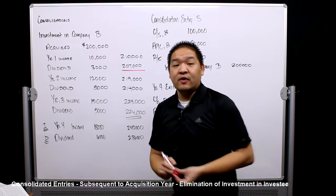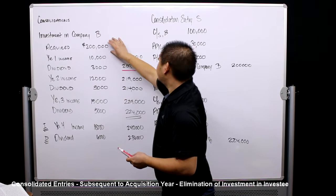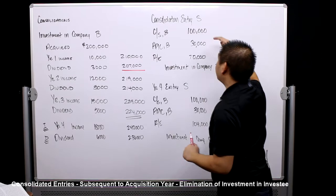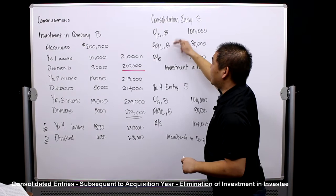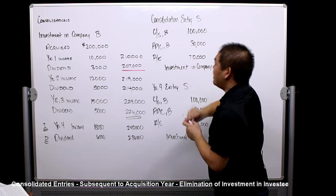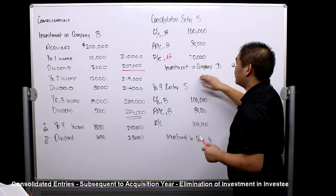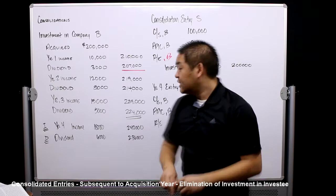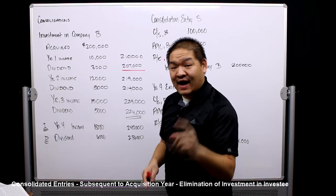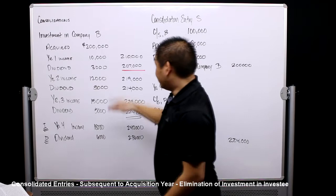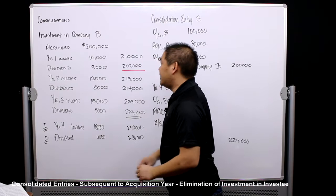In year one, consolidation entry S reverses these by debiting Company B's common stock, additional paid-in capital, and retained earnings — B's retained earnings on their books for $70,000 — and crediting investment in Company B for $200,000. Consolidation entry I reverses the $10,000 income entry, and consolidation entry D reverses the $3,000 dividend entry.